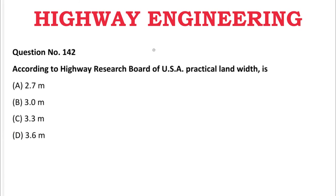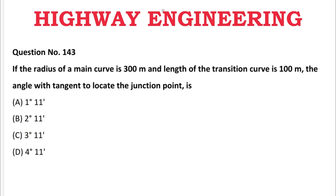Next question: According to the Highway Research Board of USA, the practical lane width is — A: 2.7 m, B: 3.0 m, C: 3.3 m, D: 3.6 m. The correct answer is D, 3.6 meters.